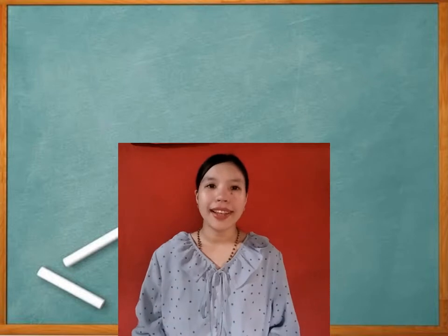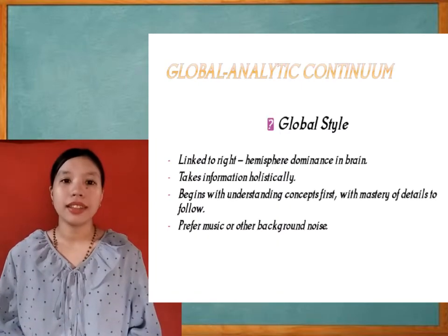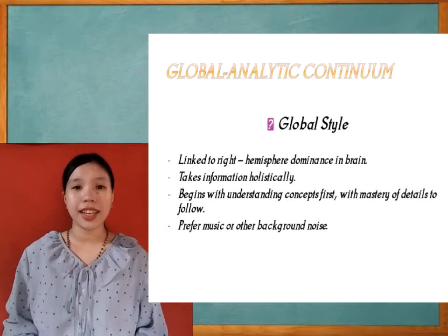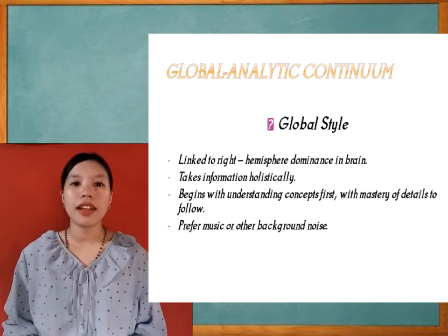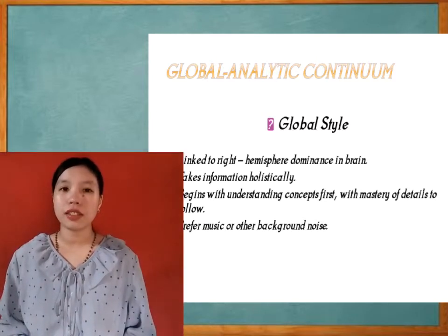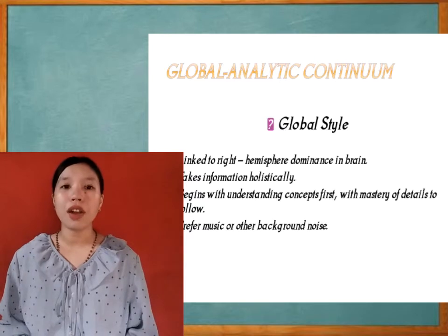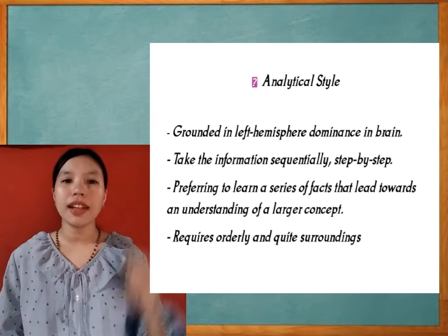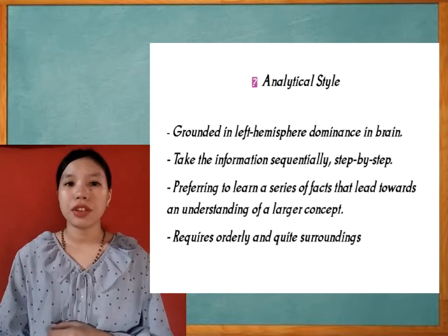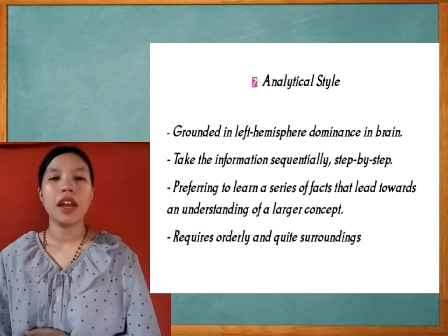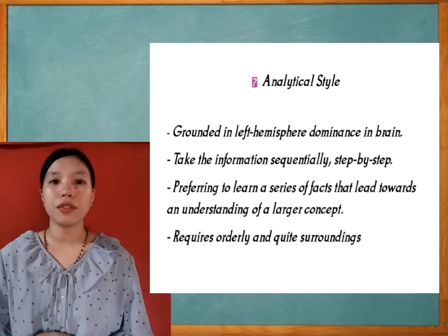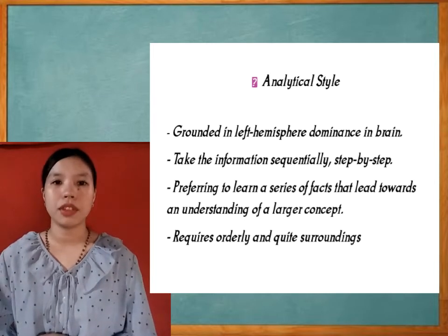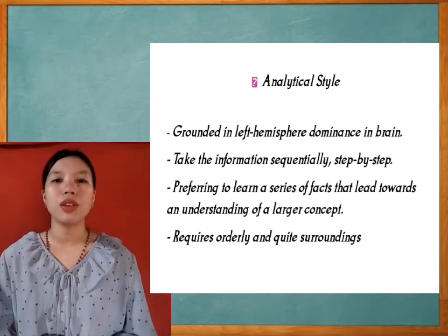Now the global analytic continuum. The global style is linked to right hemisphere dominance in the brain. It takes information holistically, beginning with understanding concepts first with mastery of details to follow, and prefers music or other background noise. The analytic style is grounded in left hemisphere dominance in the brain, taking information sequentially and step by step, preferring to learn a series of facts that lead toward understanding a larger concept, and requires orderly and quiet surroundings.